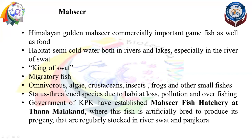Mahseer is omnivorous in nature — it eats algae, crustaceans, insects, frogs, and small fishes. Its status is a threatened fish — not yet endangered, but it is on Pakistan's threatened fish list. The reasons include habitat loss, pollution, and overfishing.